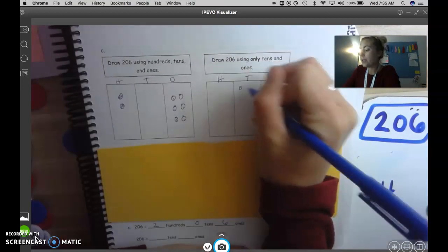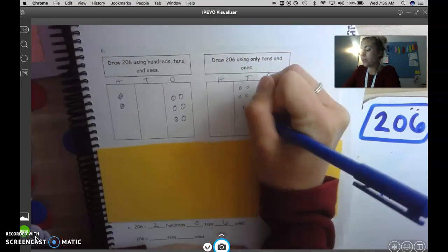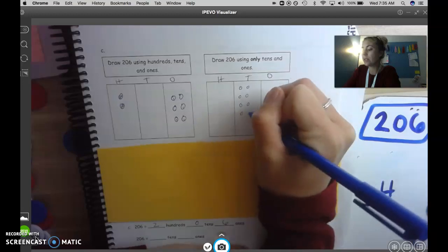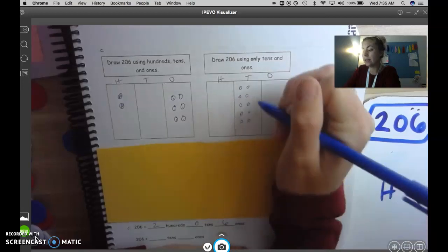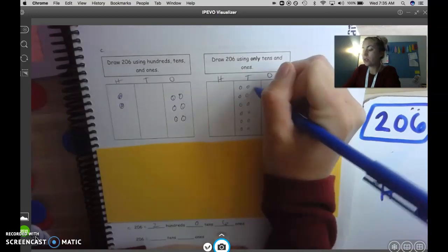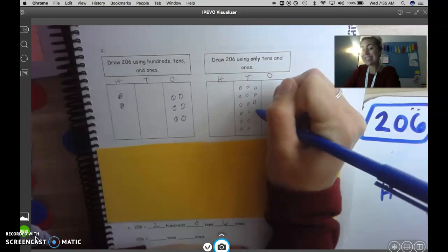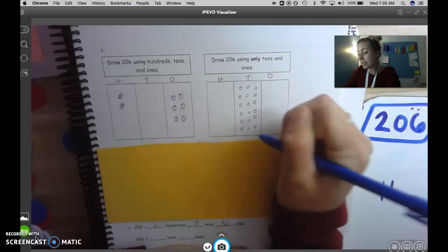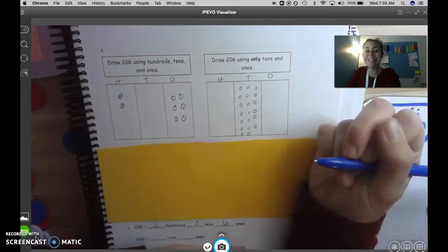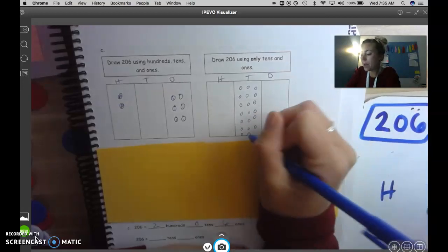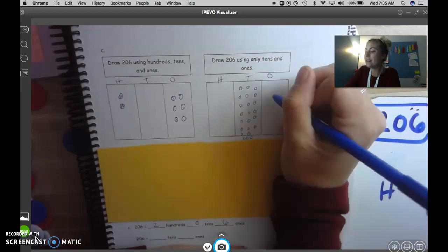Count with me. 1 ten, 2 tens, 3 tens, 4 tens, 5 tens, 6 tens, 7 tens, 8 tens, 9 tens, 10 tens, 11 tens, 12 tens, 13 tens, 14 tens, 15 tens, 16 tens, 17 tens, 18 tens, 19 tens, 20 tens.